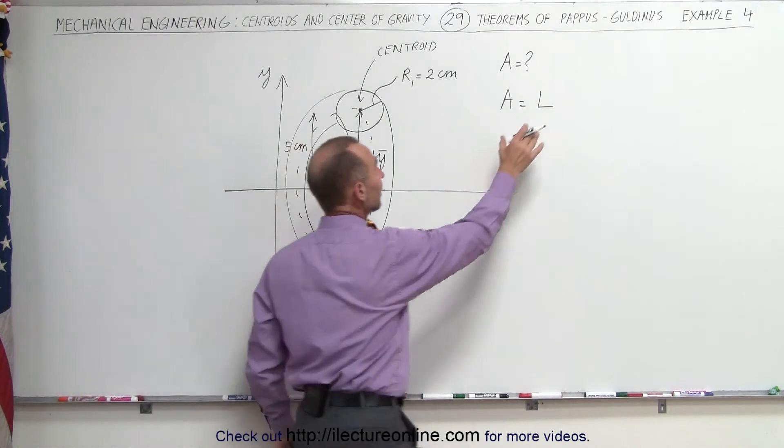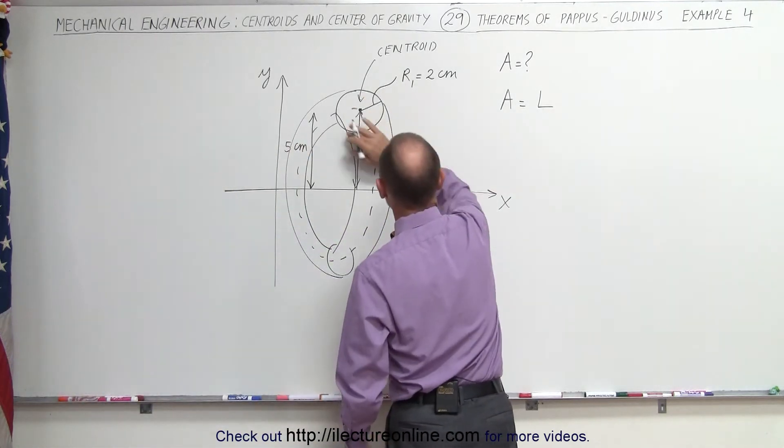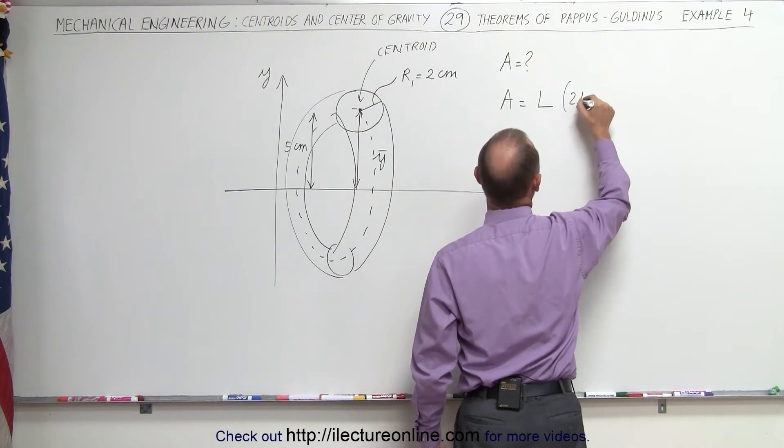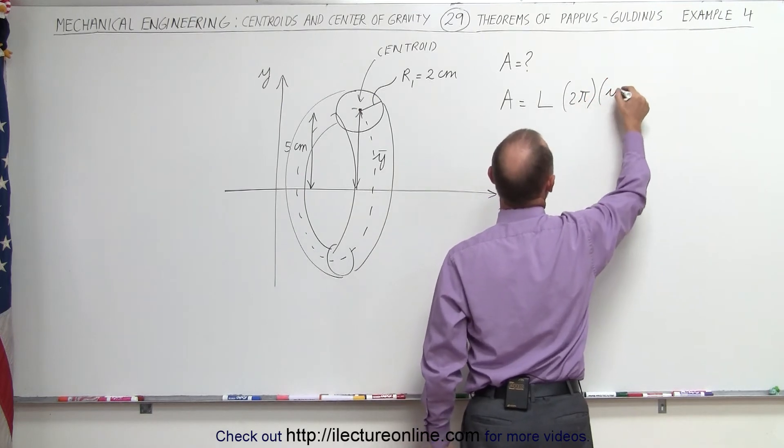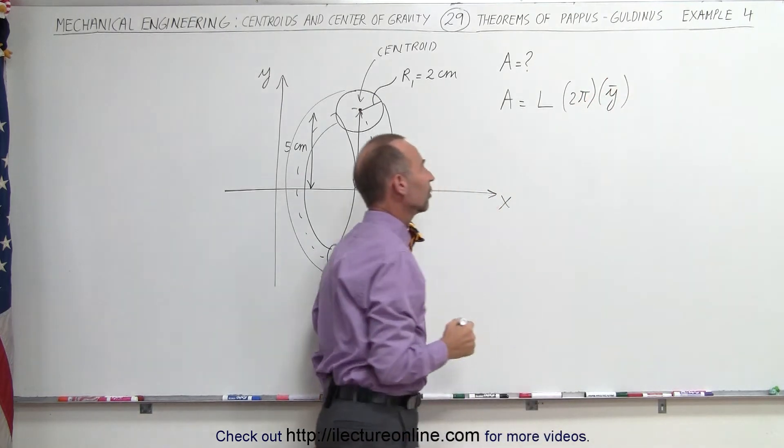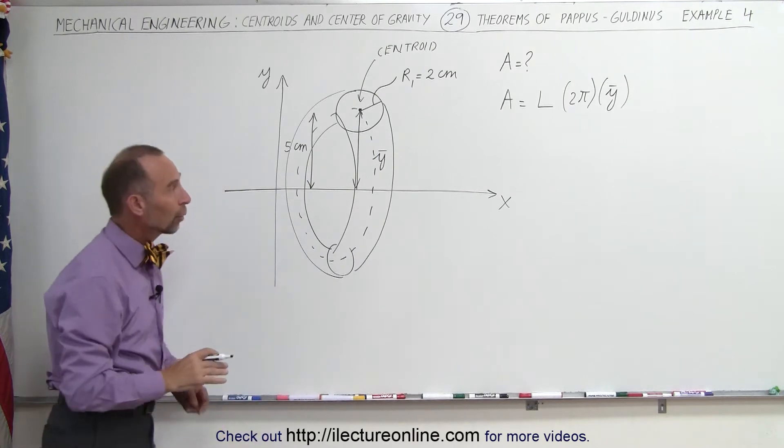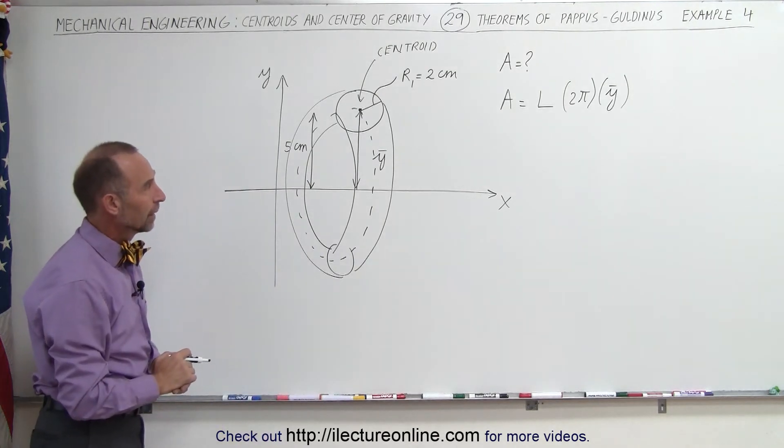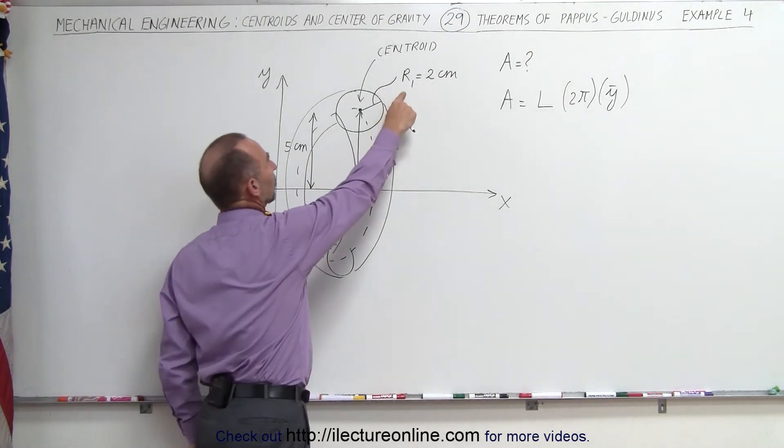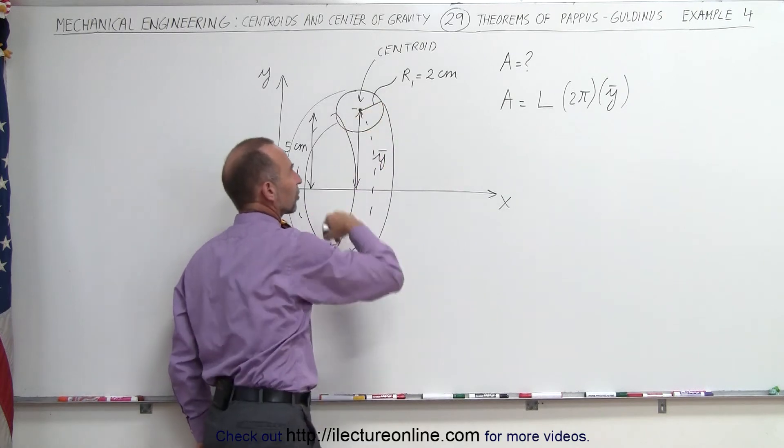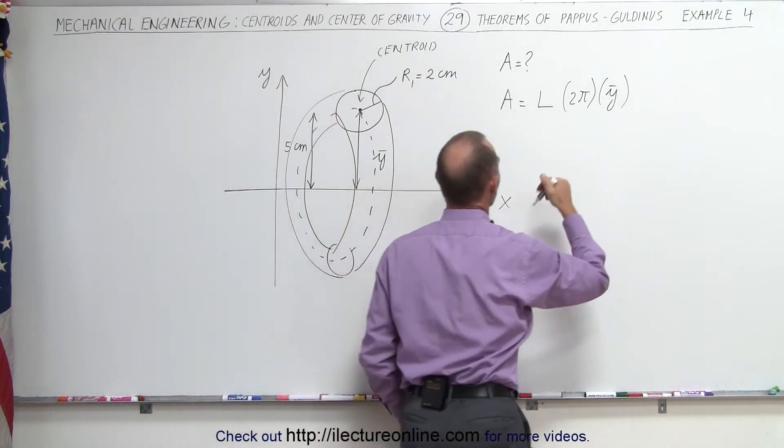Again, it'll be the length of the curve times the path of the centroid, which is 2π times the radius that the centroid path takes, which is the y-coordinate of the centroid. R1 is considered the radius of that little circle there that we're rotating about the x-axis.